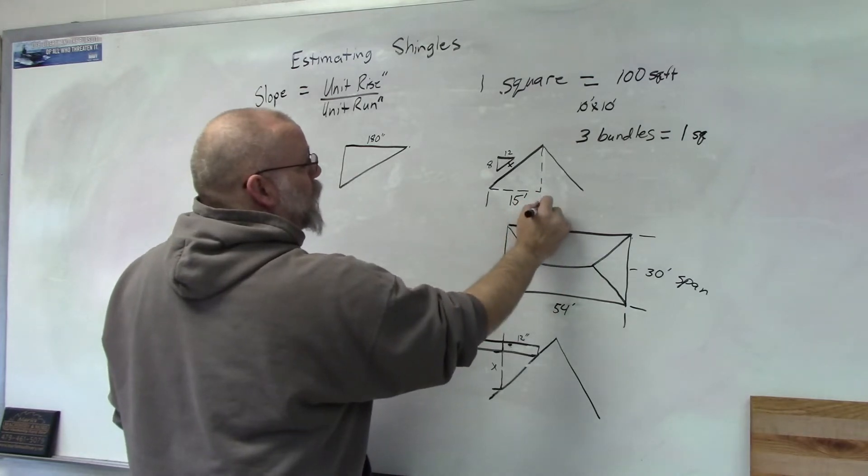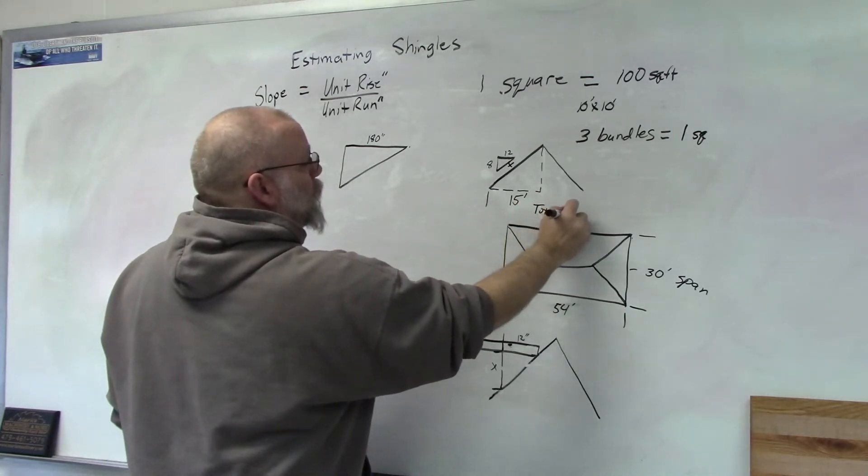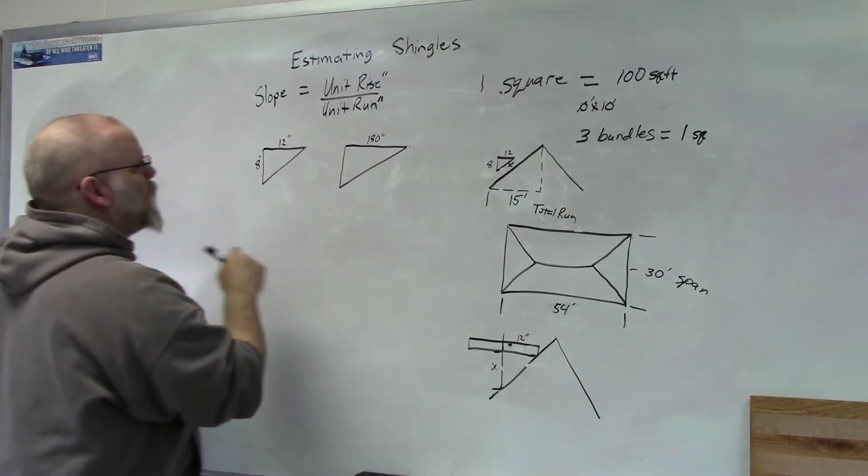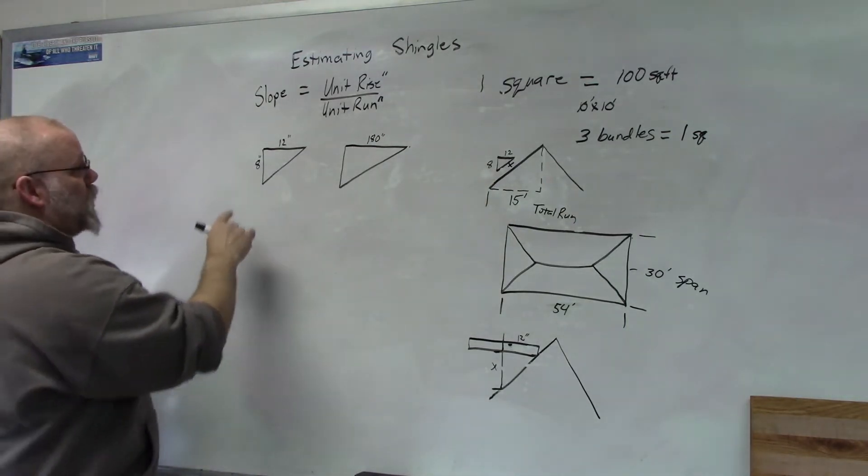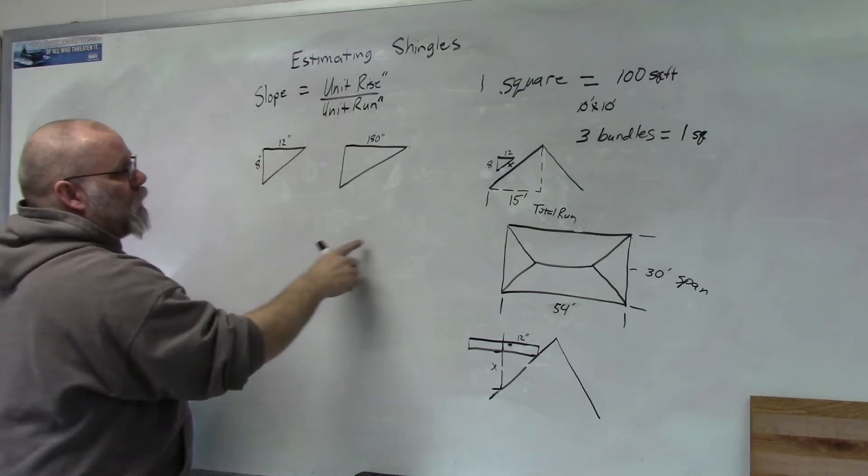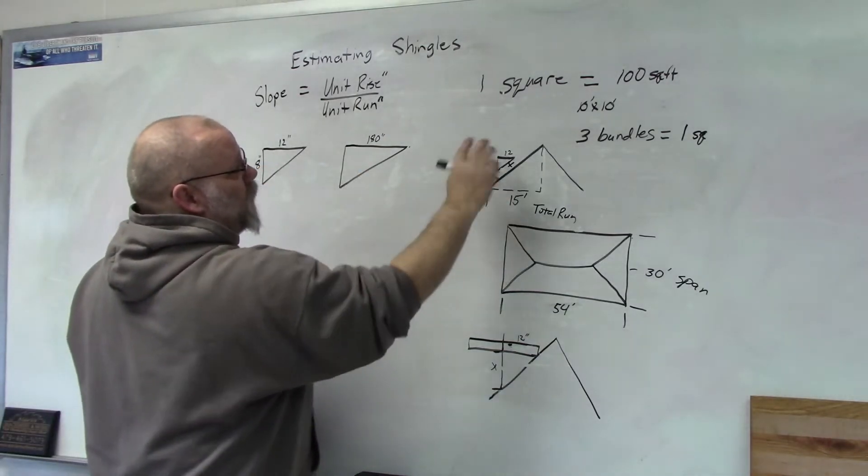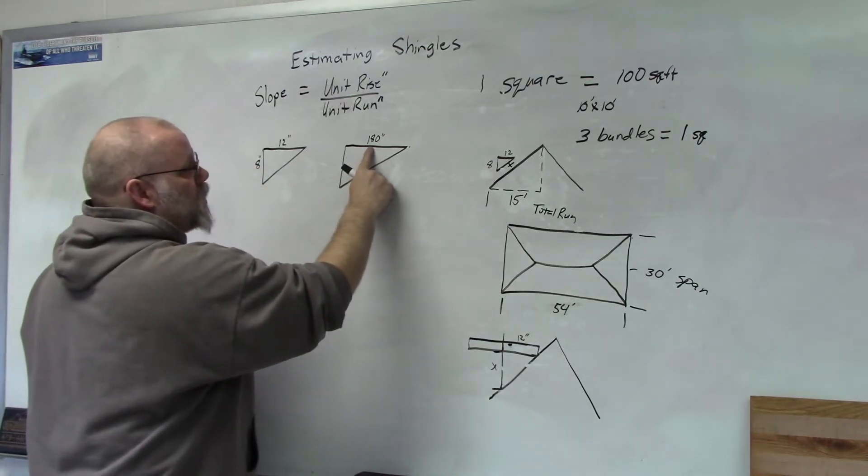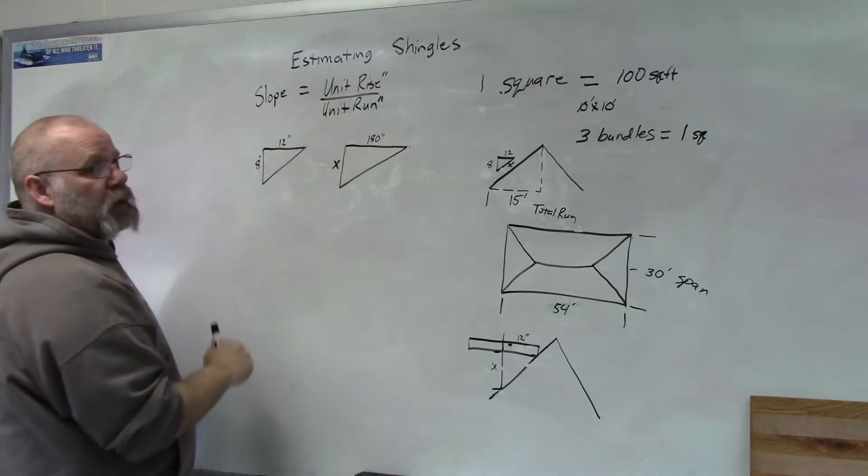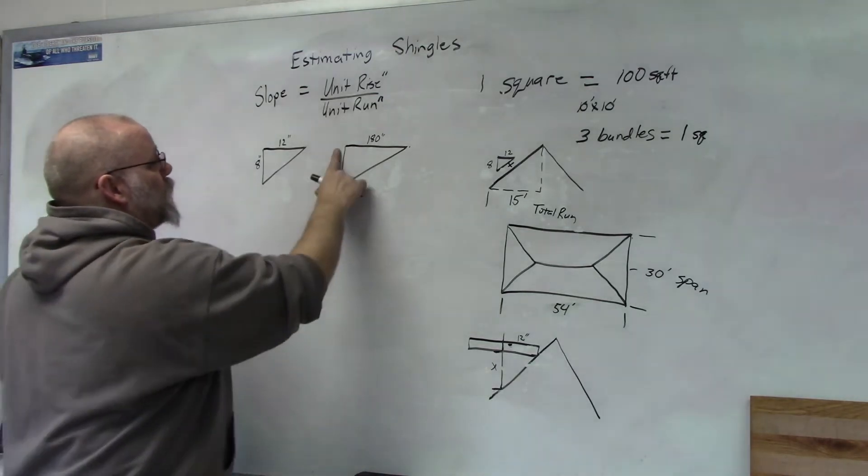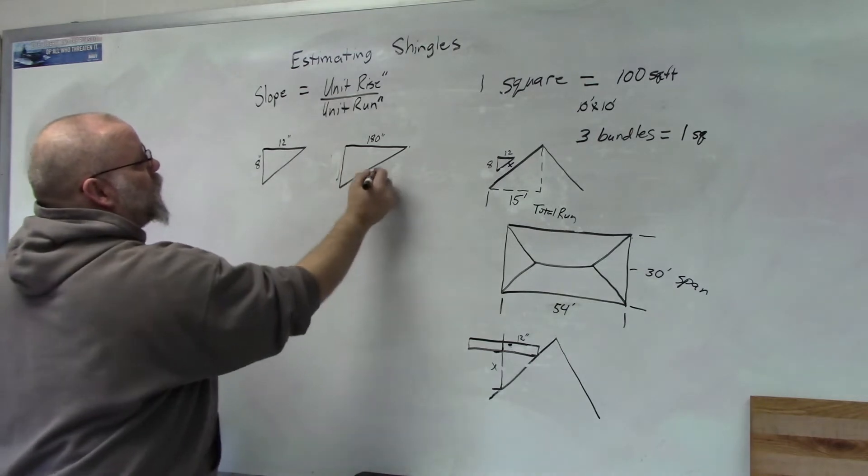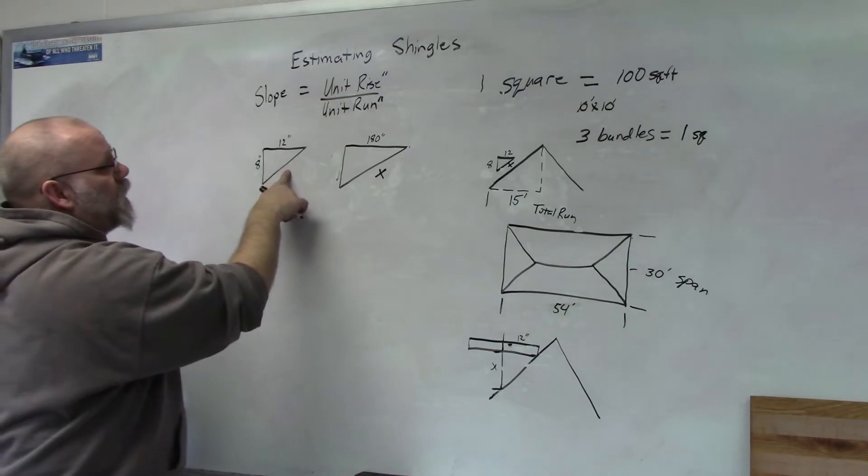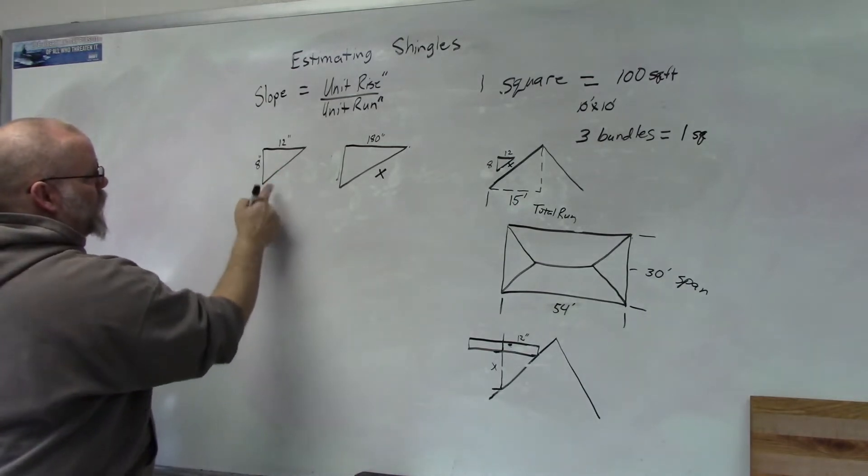We're going to use similar triangles to find out what X is. In this triangle we have 8 over 12, and in this other triangle, which I just flipped, I converted this number to inches, which is 180 inches. We need to find this number, so the first thing we're going to do is use the Pythagorean theorem.